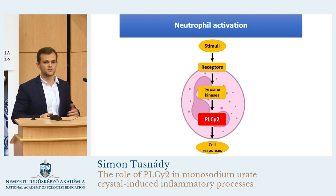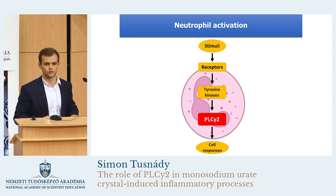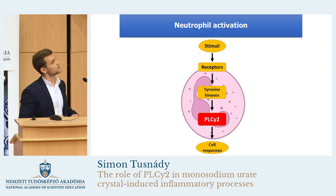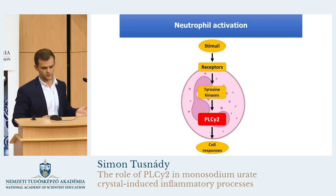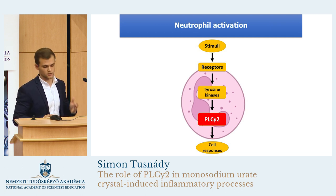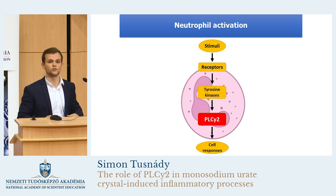In recent years, our research group has investigated in several disease models which signaling pathways have an important role in the activation of the neutrophils. The stimuli are recognized by membrane receptors, and based on our lab's earlier results, in many cases this leads to the activation of tyrosine kinase-mediated signaling pathways. The phospholipase C gamma 2, or PLC gamma 2, is a crucial downstream element of this pathway. And in the absence of PLC gamma 2, in the case of many stimuli, the activation of the neutrophils cannot be induced.